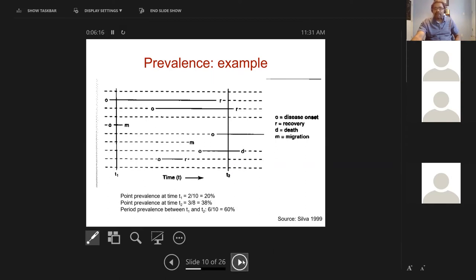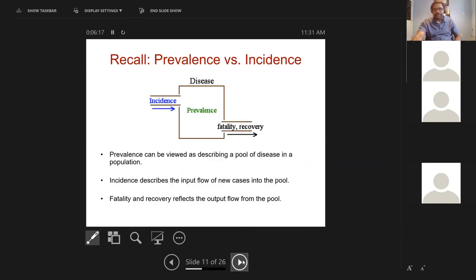So what's the relationship conceptually between prevalence and incidence? Think of incidence as what is feeding disease into the community - new cases that happen, they get popped into the entire community. New cases add to the disease pool.